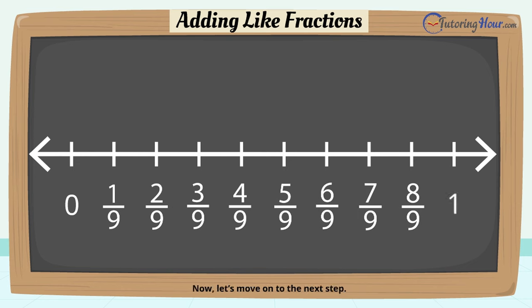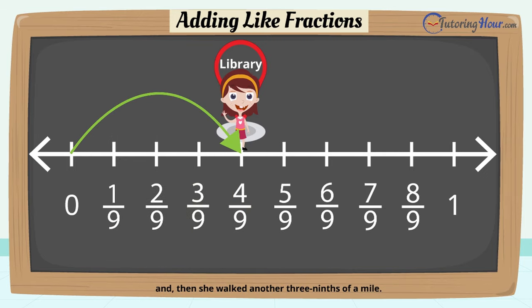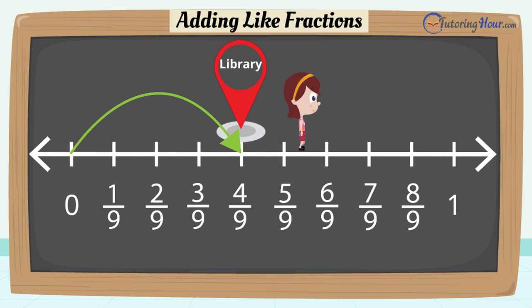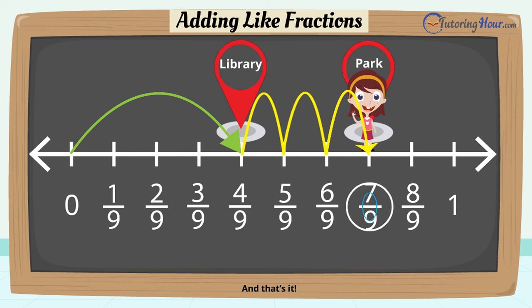Now let's move on to the next step. Linda walked four ninths of a mile. So let's draw a hop from zero to four over nine. And then she walked another three ninths of a mile. Starting at four over nine, I'll draw three more hops covering one ninth, then two ninths, and then three ninths of a mile. And that's it. Linda walked seven ninths of a mile in all.